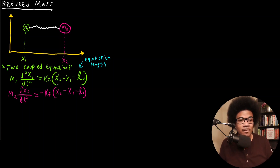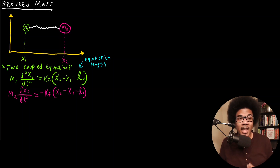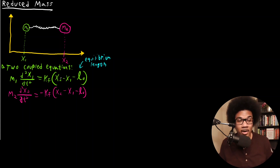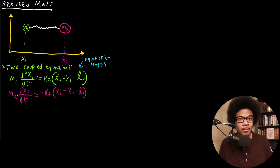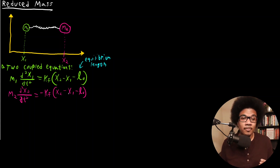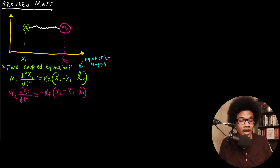We have this negative sign to account for that. Also, these equations are coupled because X one's equation of motion does not just depend on X one — it depends on the position of mass two as well. Similarly, mass two's position does not just depend on X two; it also depends on X one. That's why these equations are coupled.